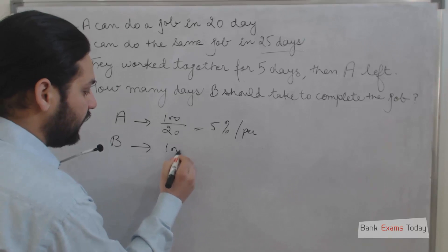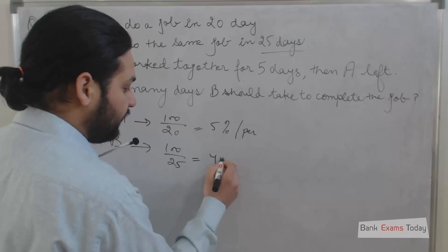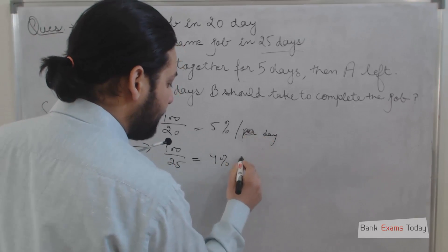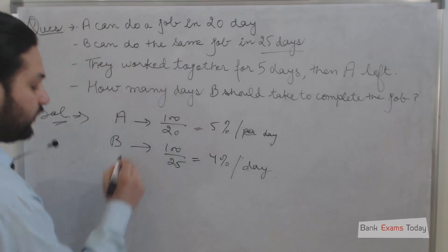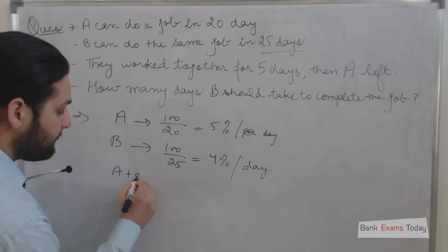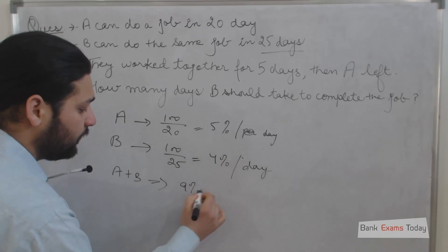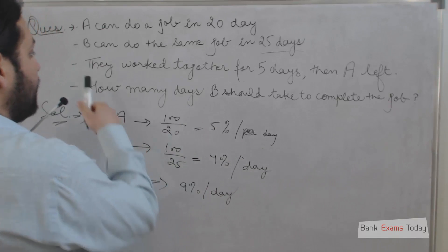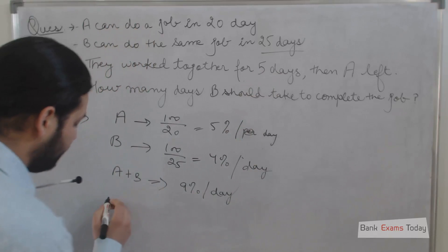If they work together, then they can do 4 plus 5, which is 9% of the job per day. So they both worked for 5 days and they left.